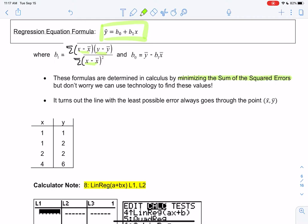Just a fun fact, the line with the least possible error will always have the average x bar, y bar will always be in the line.